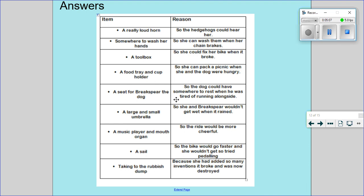A seat for Brakespear the dog so the dog could have somewhere to rest when he was tired of running alongside. A large and small umbrella so she and Brakespear wouldn't get wet when it rains. A music player or a mouth organ so the ride would be more cheerful. A sail so the bike would go faster and she wouldn't get so tired of pedalling. Taking to the rubbish dump because she had added so many inventions it broke and was now destroyed.